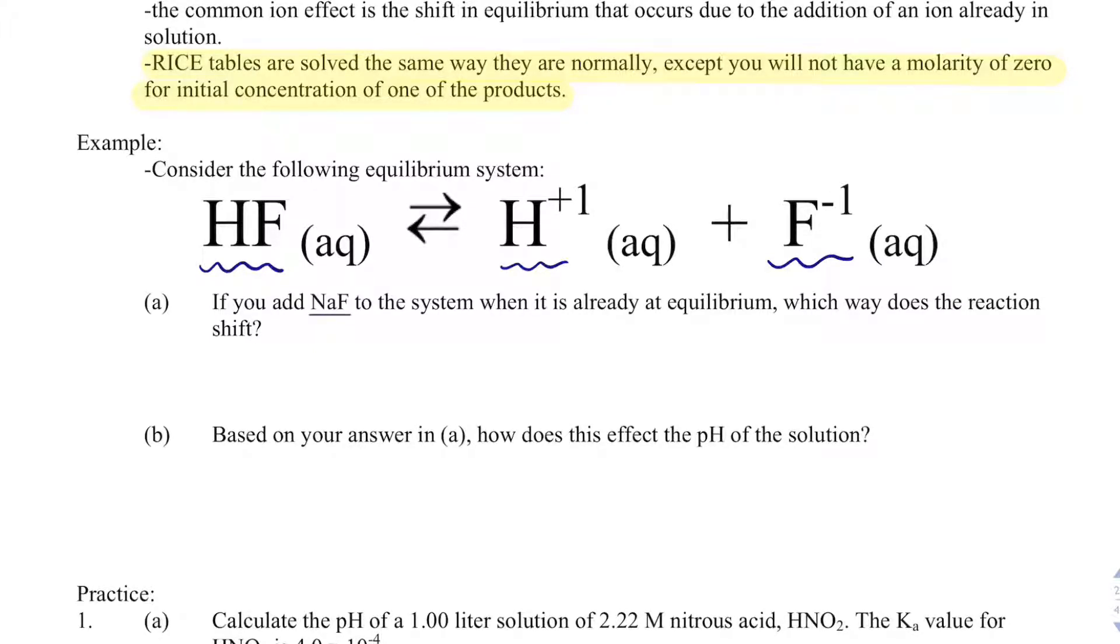We've got to first think, what is the common ion here? I don't have any sodium in my reaction, but I do have F-. So F- is my common ion, so I can think of this as increasing. If that increases, my reaction will shift left.